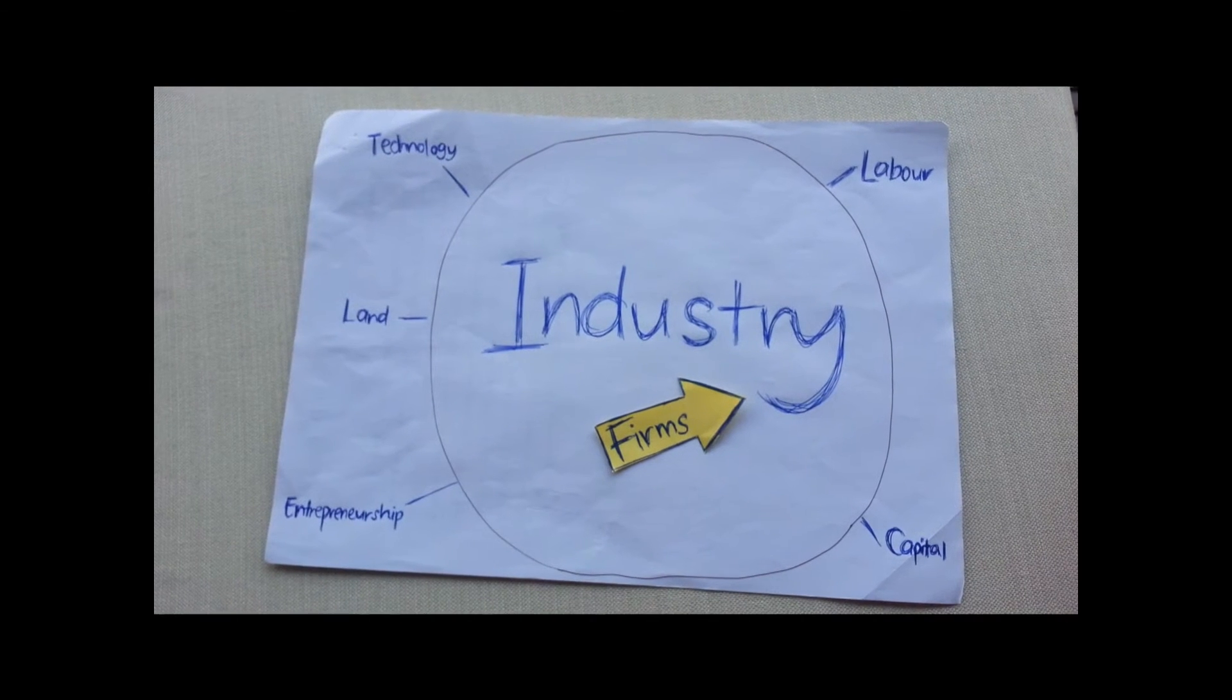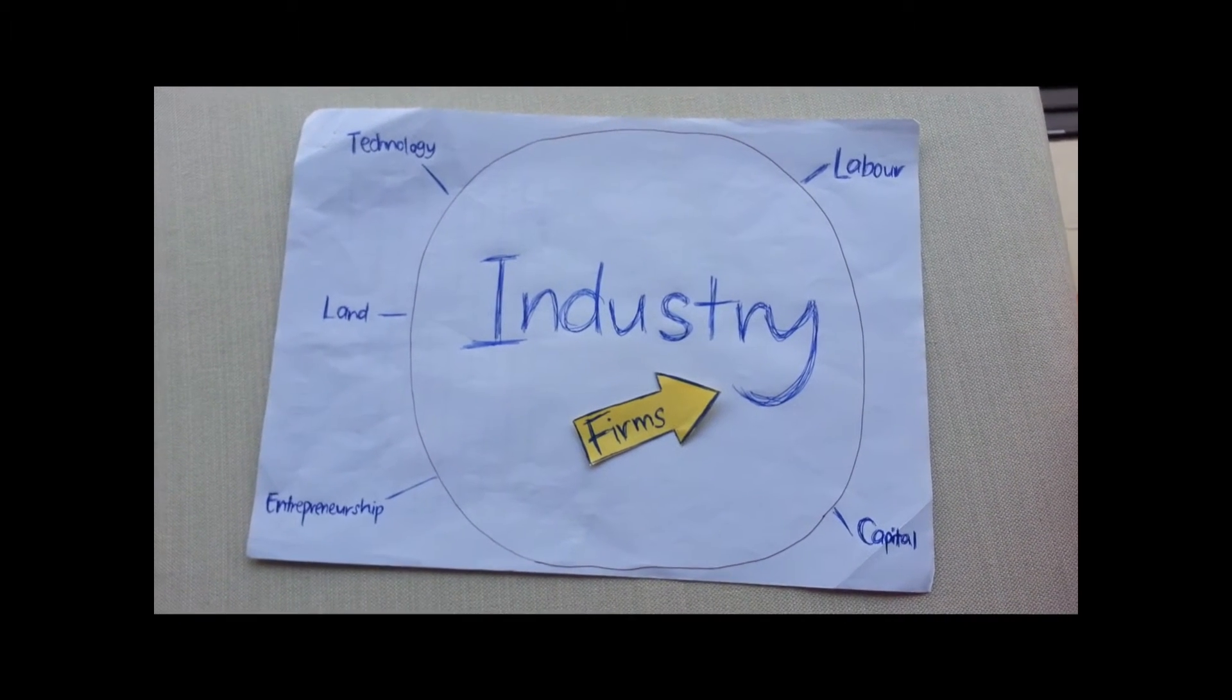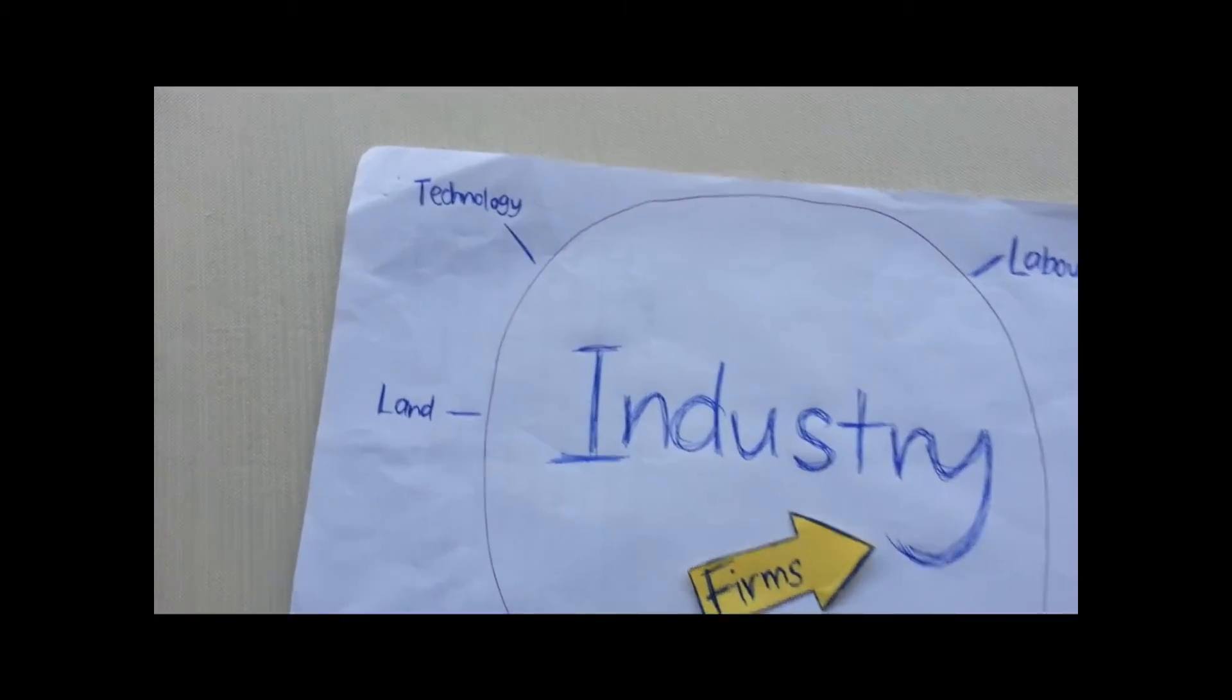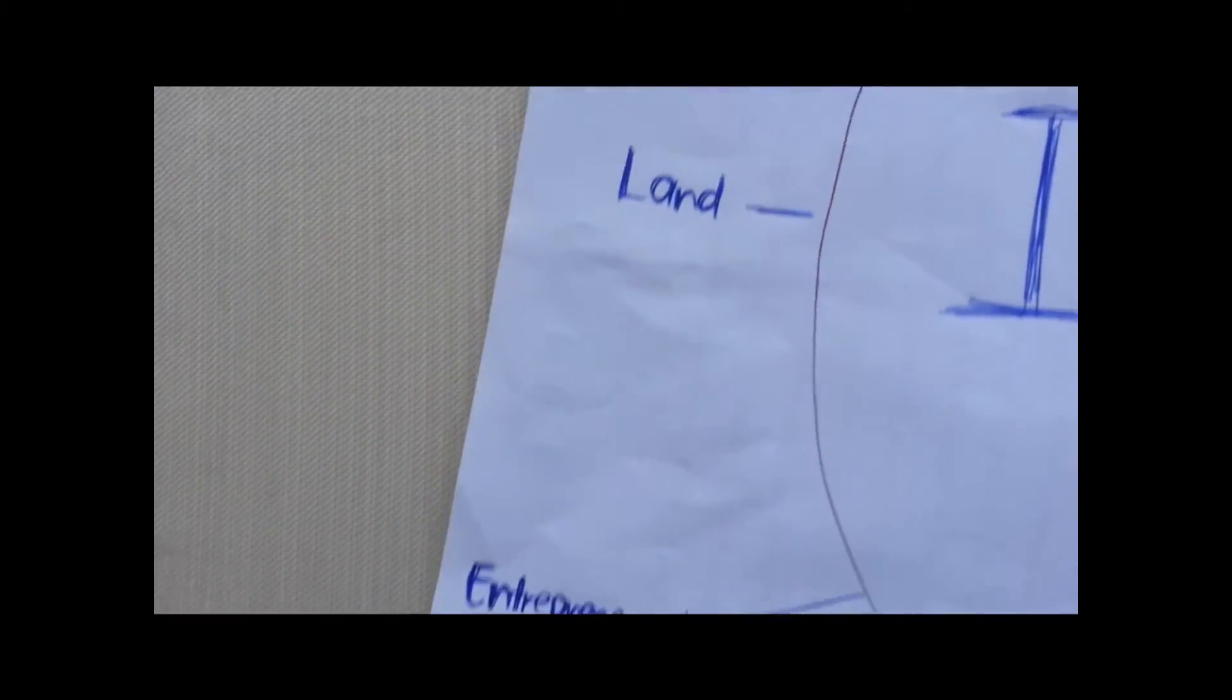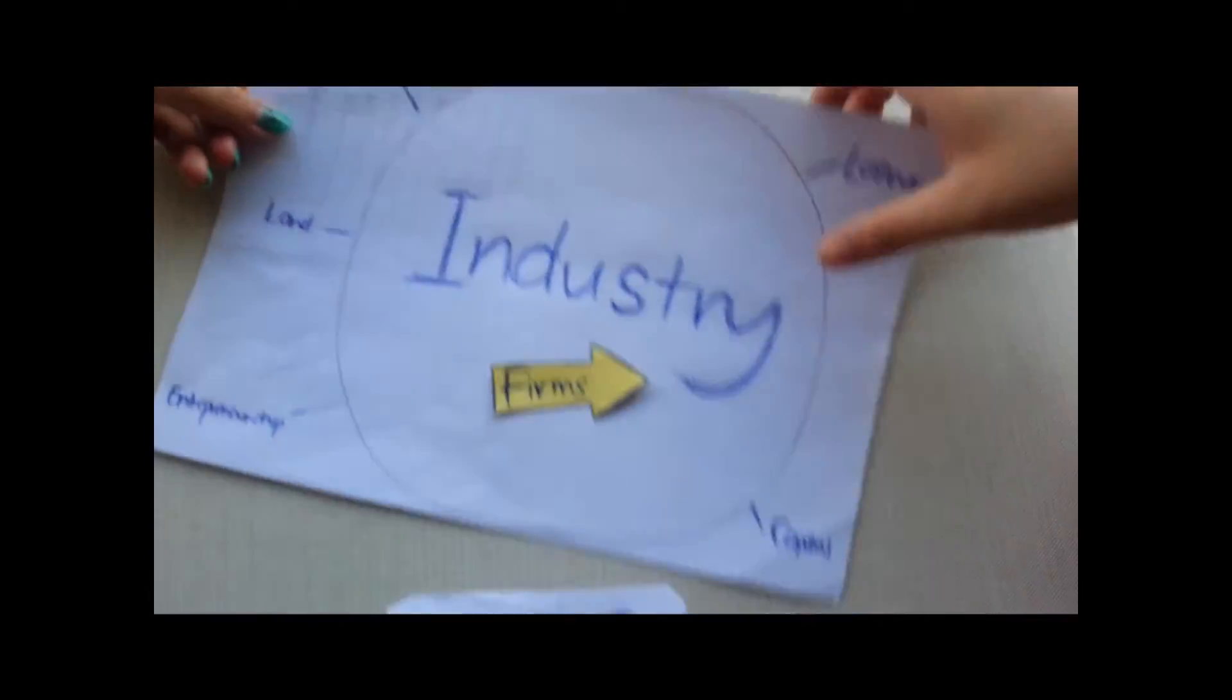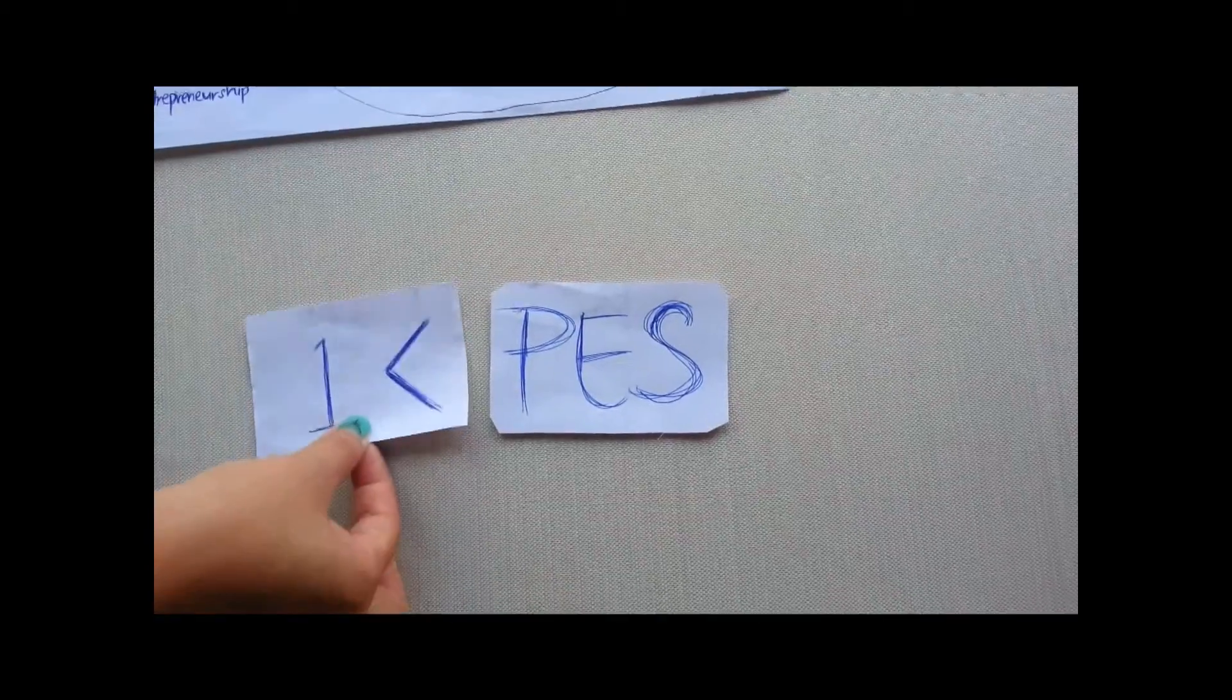Let me use the price elastic supply curve to explain the process to you. In the long run, when producers have sufficient time to expand the inputs easily, supply of margarine would become price elastic. PES would be bigger than 1 but smaller than infinity.